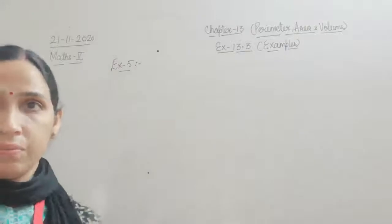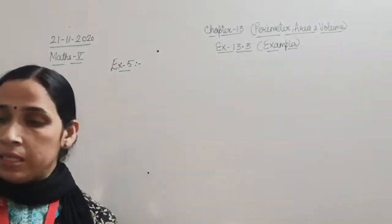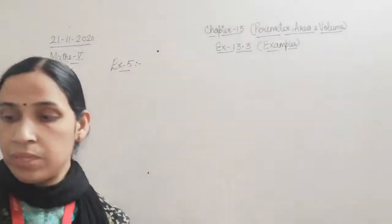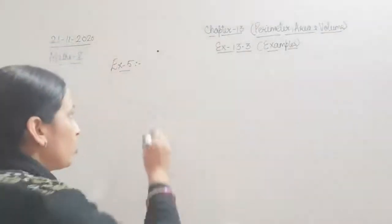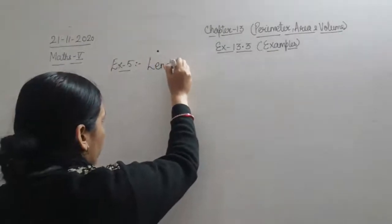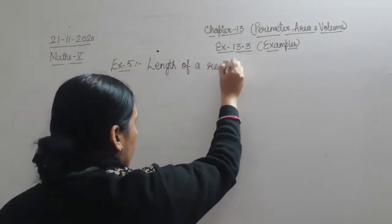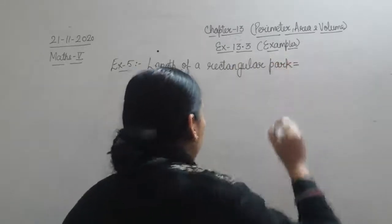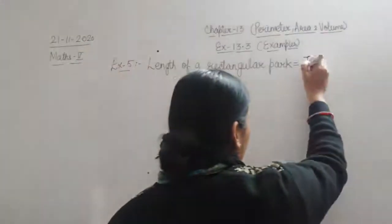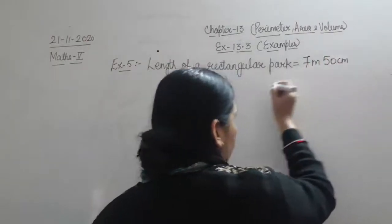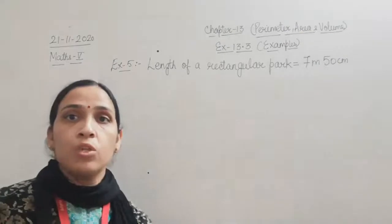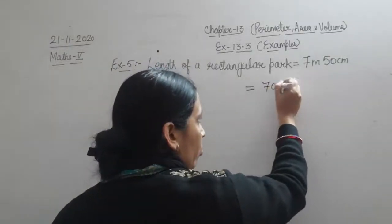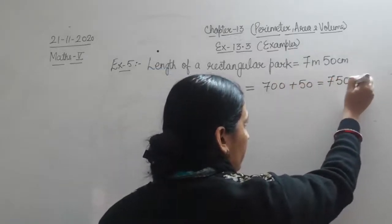In Example 5, the length and breadth of a rectangle are 7m 50cm and 60cm respectively — find its area. Length of the rectangle is 7m 50cm. Now here breadth is given in centimetres, so you are supposed to change this length into centimetres. We all know 1 metre equals 100 centimetres, so 7 multiplied by 100 gives 700, plus 50 equals 750 centimetres.